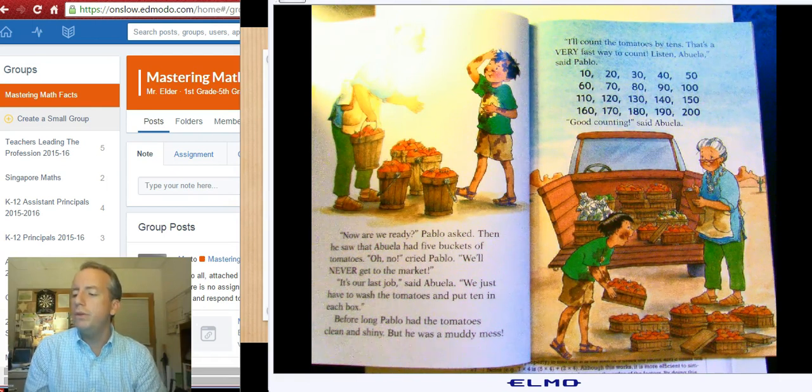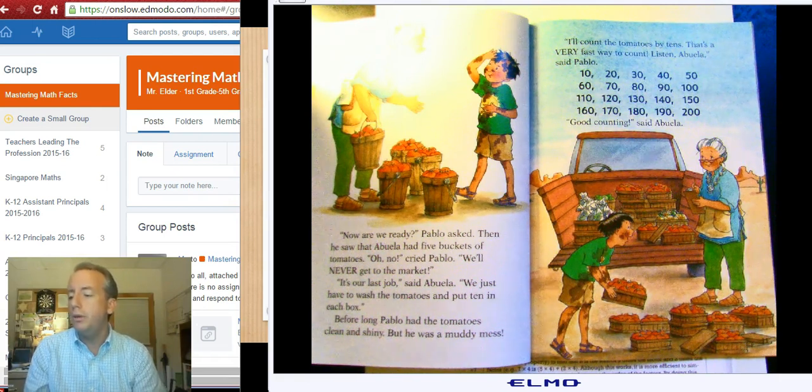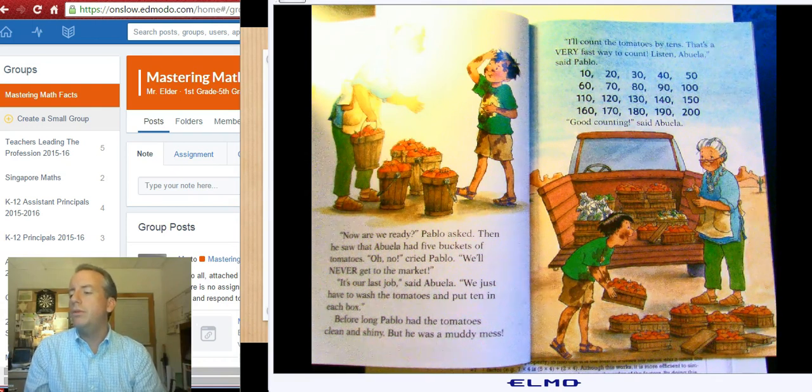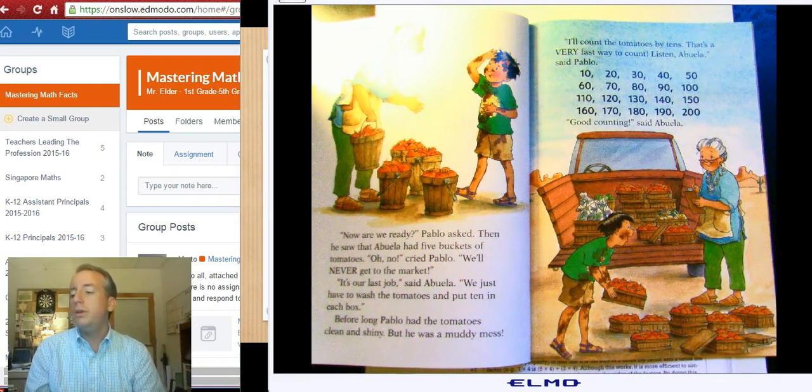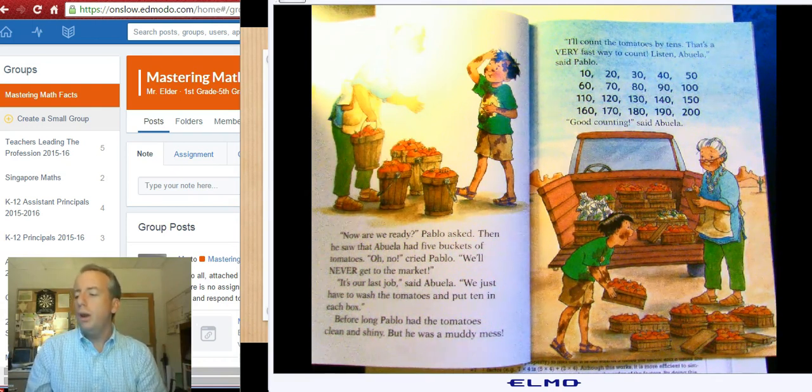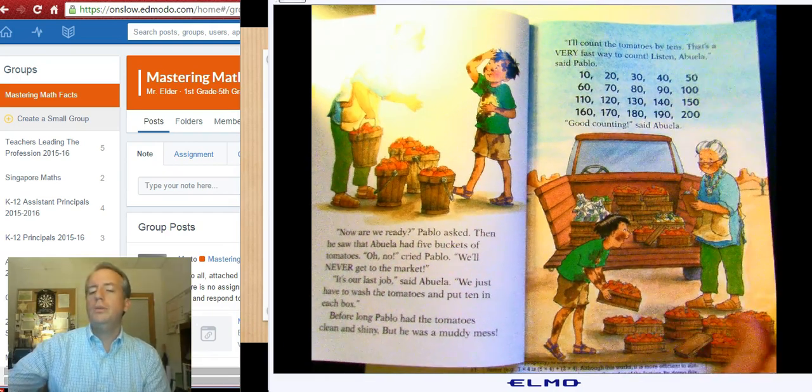I'll count the tomatoes by tens. That's a very fast way to count. Listen, Abuela, said Pablo. Ten, twenty, thirty, forty, fifty, sixty, seventy, eighty, ninety, a hundred, a hundred ten, a hundred twenty, a hundred thirty, a hundred forty, a hundred fifty, a hundred sixty, a hundred seventy, a hundred eighty, a hundred ninety, two hundred. Good counting, said Abuela.